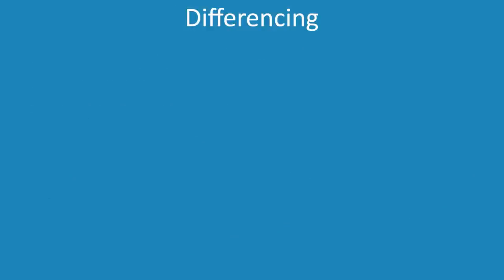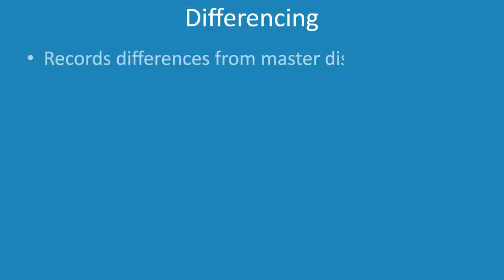The next disk type is differencing. This disk type records the differences from the master disk, known as the parent disk. If you create a virtual hard disk, you could configure it how you want — for example, installing an operating system on it.